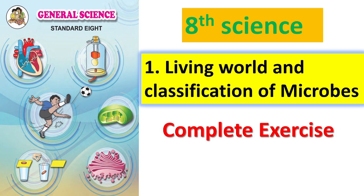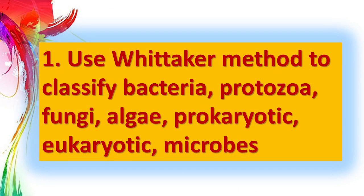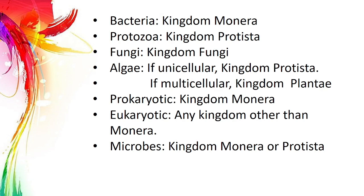Question 1: Use Whittaker's method to classify bacteria, protozoa, fungi, algae, prokaryotes, and eukaryotic microbes. Answer: Bacteria – Kingdom Monera; Protozoa – Kingdom Protista; Fungi – Kingdom Fungi; Algae, if unicellular – Kingdom Protista, if multicellular – Kingdom Plantae; Prokaryotes – Kingdom Monera; Eukaryotes – any kingdom other than Monera; Microbes – Kingdom Monera or Protista.